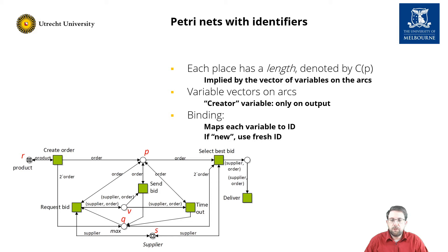For example, consider transition create order. The variable order only appears on its output arcs, hence it creates a new identifier upon firing. Thus the transition is for example enabled with a mode that assigns p1 to the variable product, and o1 to order.